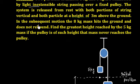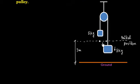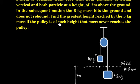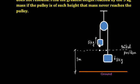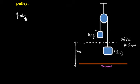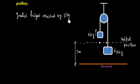In the subsequent motion, the 8 kg mass hits the ground and does not rebound. So what is happening: this mass comes down, goes up, and hits the ground and does not rebound. We need to find the greatest height reached by the 5 kg mass, assuming the mass never reaches the pulley.